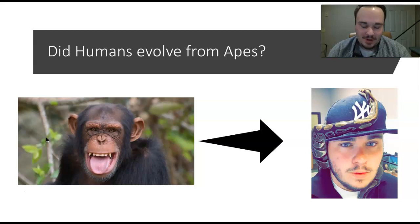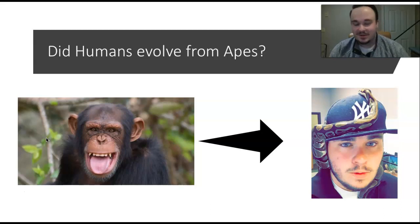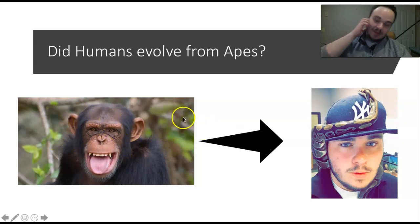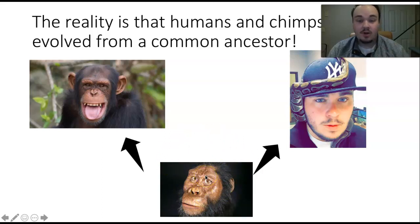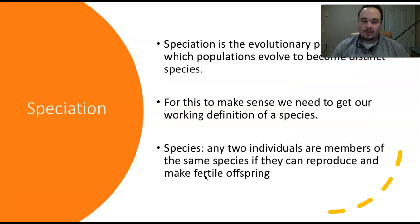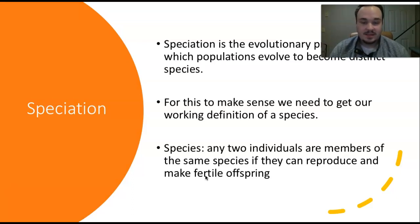Did humans evolve from apes? You may have heard someone say, 'If humans evolved from apes, why are there still apes around?' Hopefully by the end of this lecture you'll be able to explain why. Here I am and here is a chimpanzee. The answer is actually no — we didn't evolve from chimps. The reality is that we share what is called a common ancestor. This figure here is an artist's rendition of what a common ancestor we once shared with chimpanzees might have looked like.